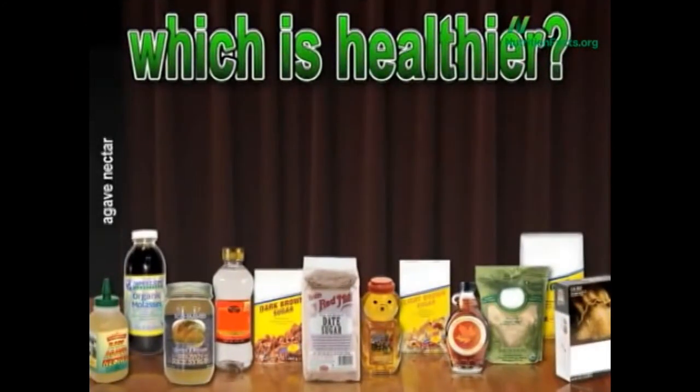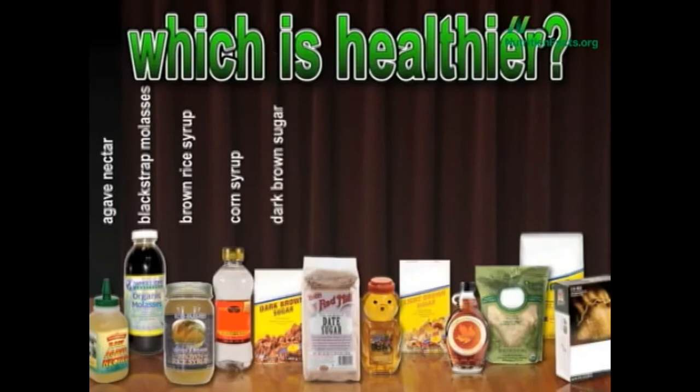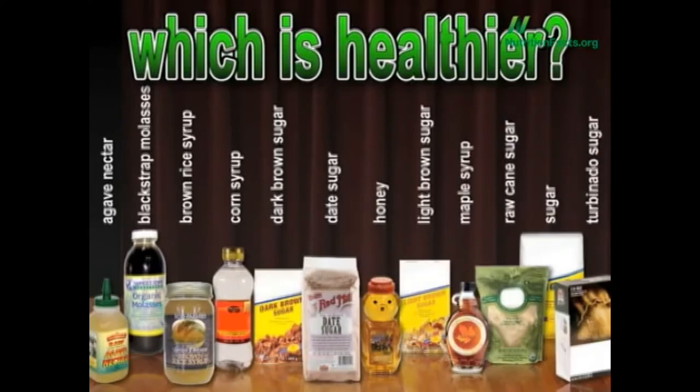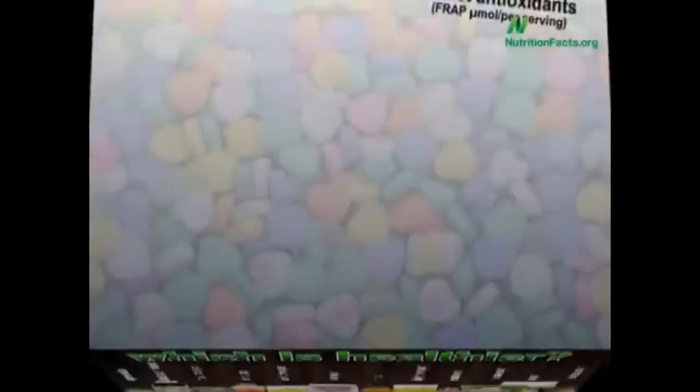Which is healthier? In alphabetical order: agave nectar, blackstrap molasses, brown rice syrup, corn syrup, date sugar, dark brown sugar, light brown sugar, maple syrup, honey, raw cane sugar, plain old sugar sugar, or turbinado sugar. Here's the graph.